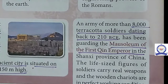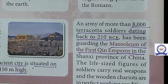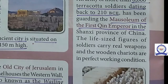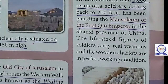The next one: an army of more than 8,000 terracotta soldiers, dating back to 210 BCE, has been guarding the mausoleum of the first Chinese emperor.